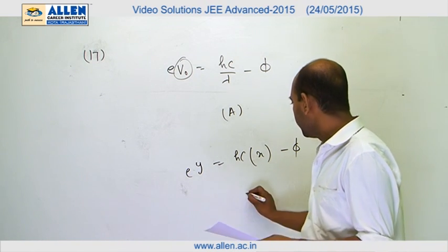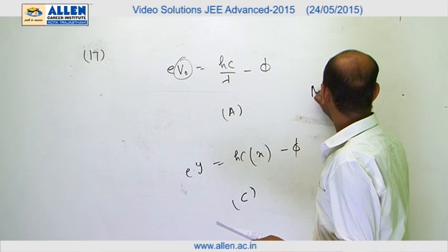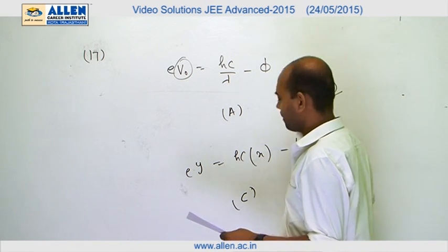So it would be a straight line with positive slope. So the answer would be C. The complete answer to this question would be A and C.